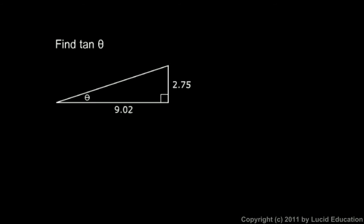Okay, next example, look at this. Same thing, but we have some different values. The tangent of theta will be the side opposite angle theta. That's 2.75 divided by the side adjacent to angle theta. That's 9.02.